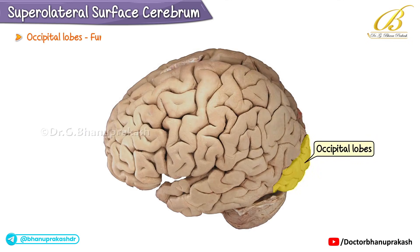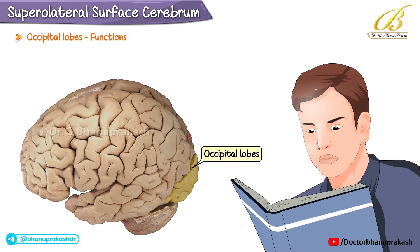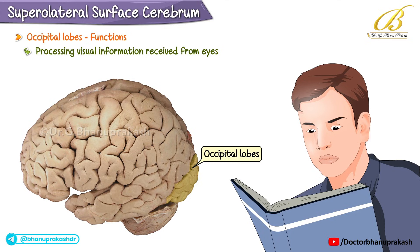The occipital lobes, although not visible in this perspective, are primarily associated with the visual system. They are responsible for processing visual information received from the eyes, allowing for the perception, recognition, and interpretation of visual stimuli.